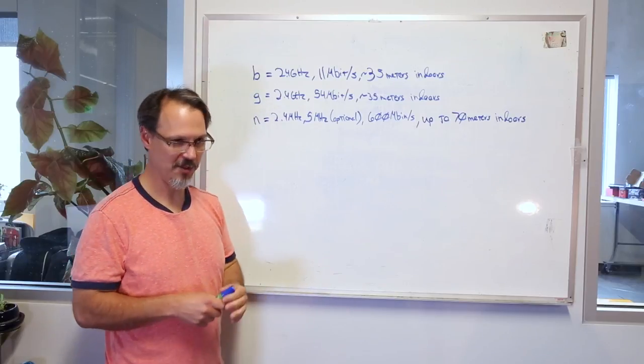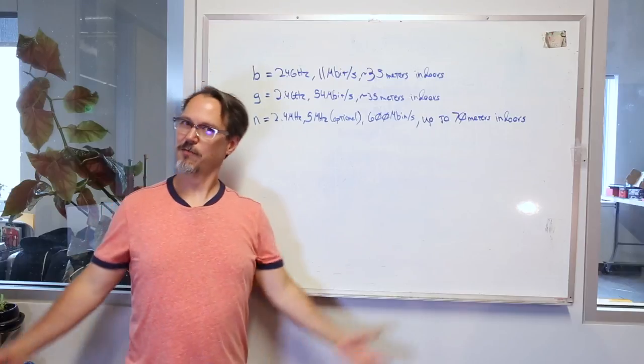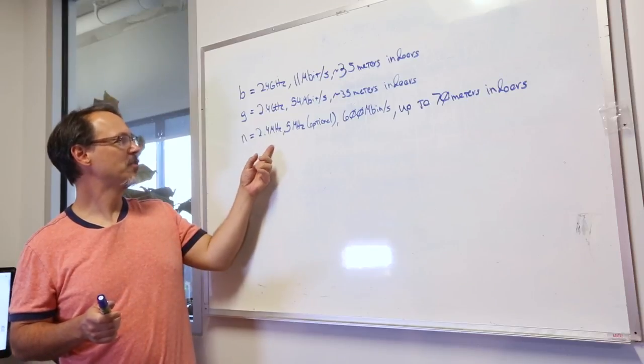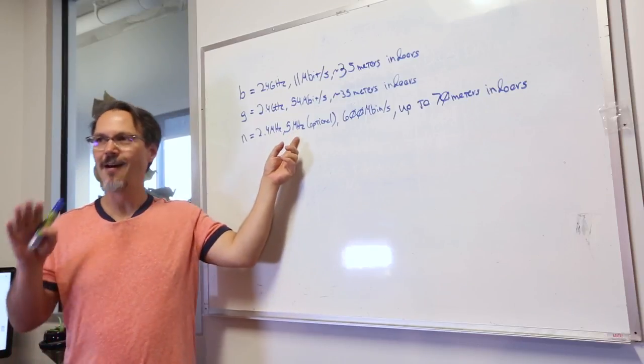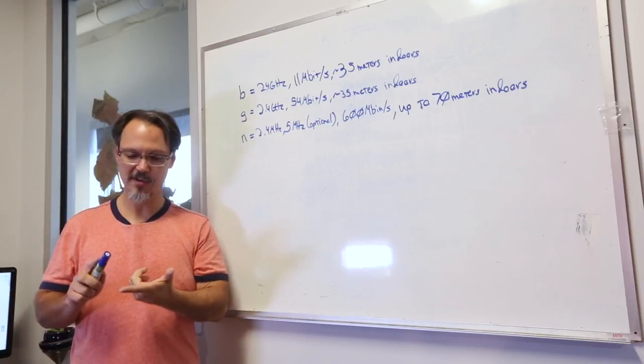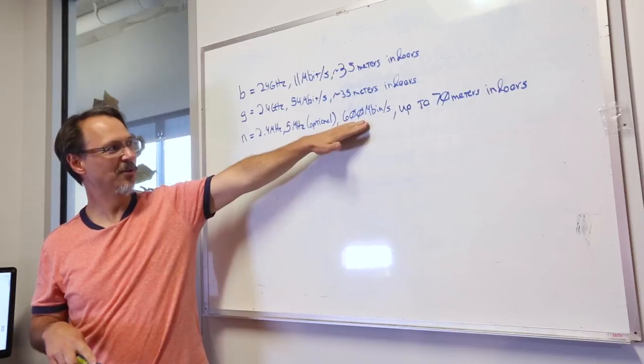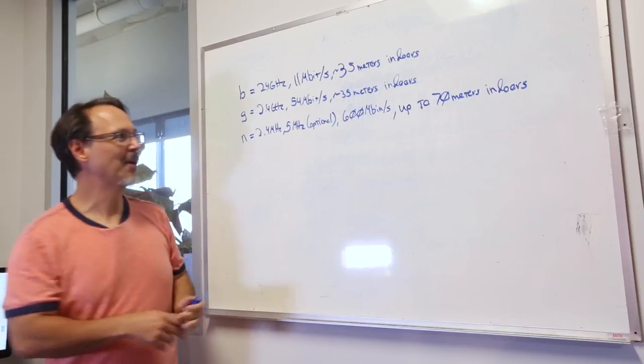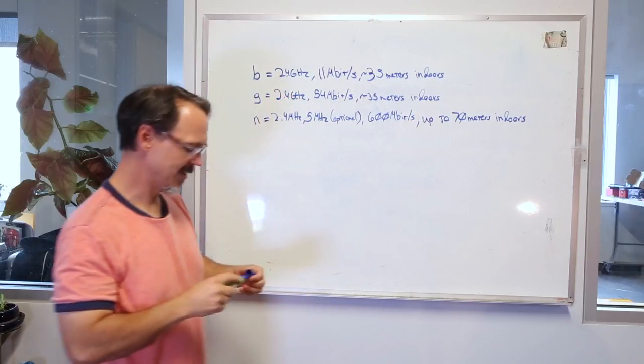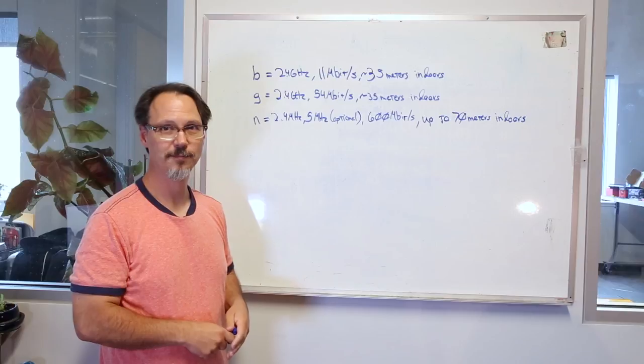And you'll notice that I'm being very careful to say up to such and such data rate. And reason of course is because these data rates are very rarely realized, especially when you get to N. Now N runs on 2.4 gigahertz, 5 gigahertz optionally. They don't have to support it, but they can do it. And also remember this runs the MIMO OFDM and what they say is that it'll get up to 600 megabits per second. You get 600 megabits per second and you can also get up to 70 meters indoors. So much improved theoretically.